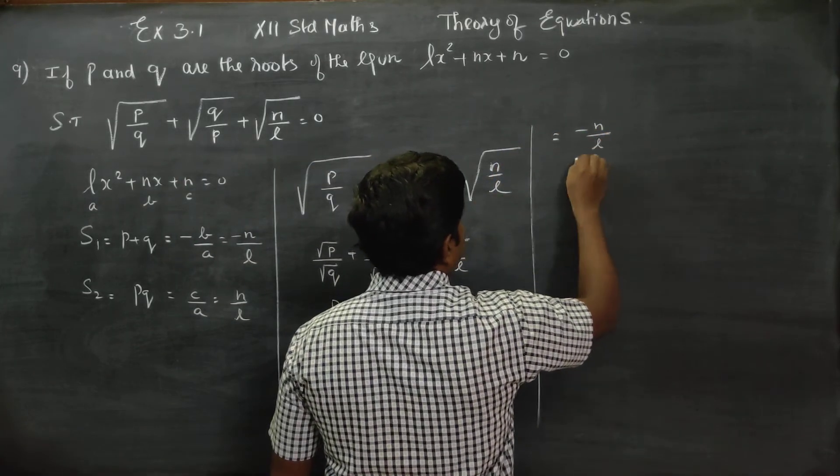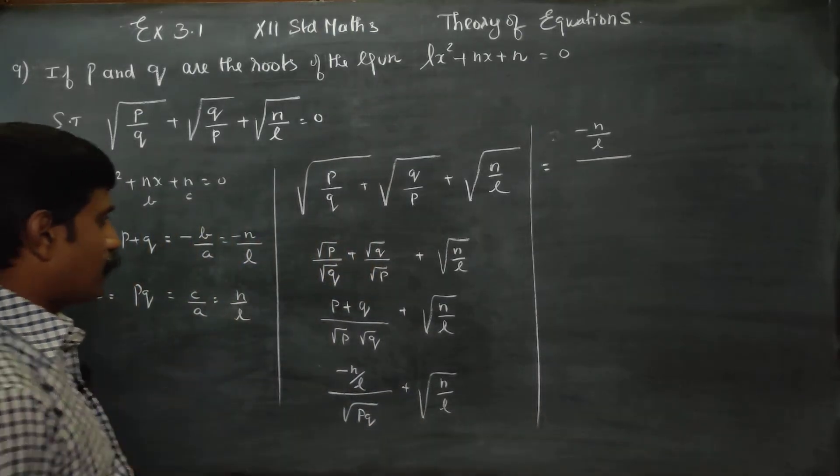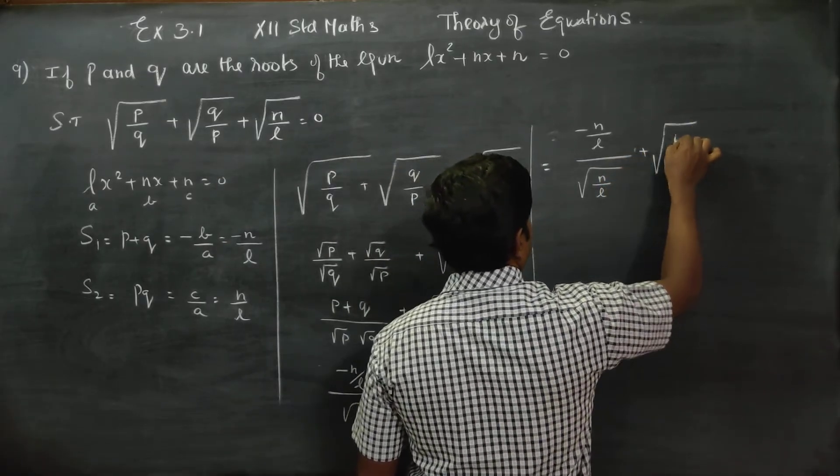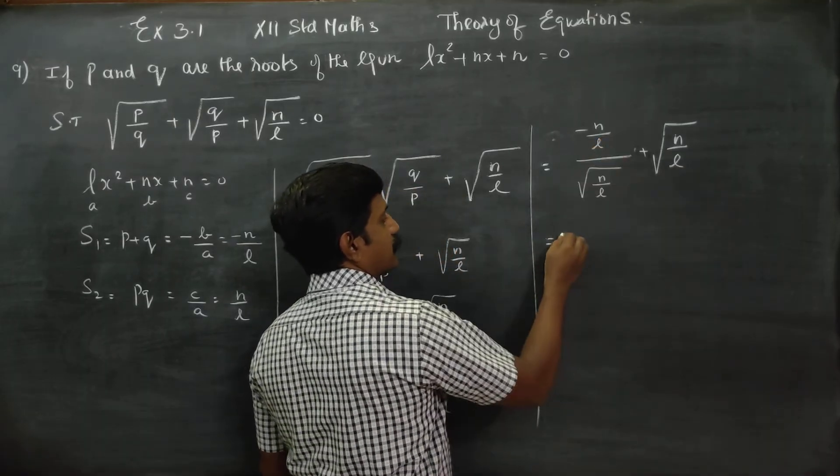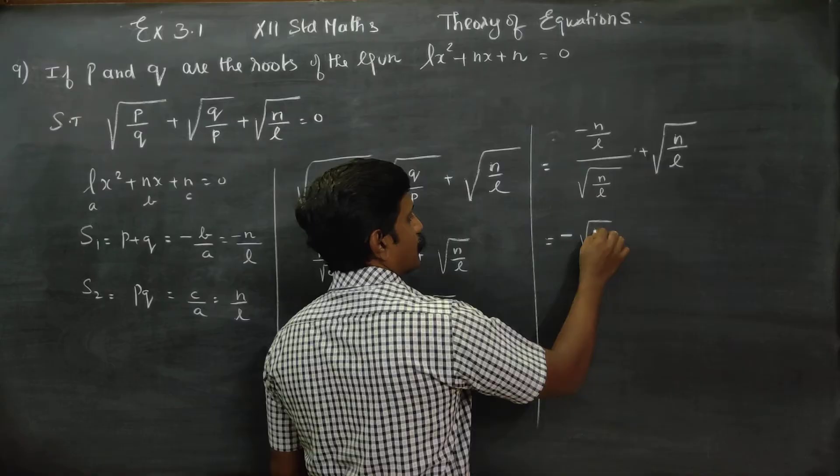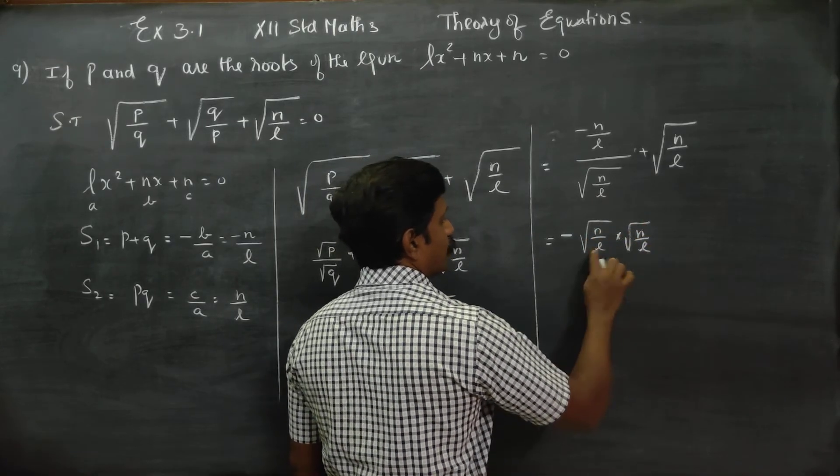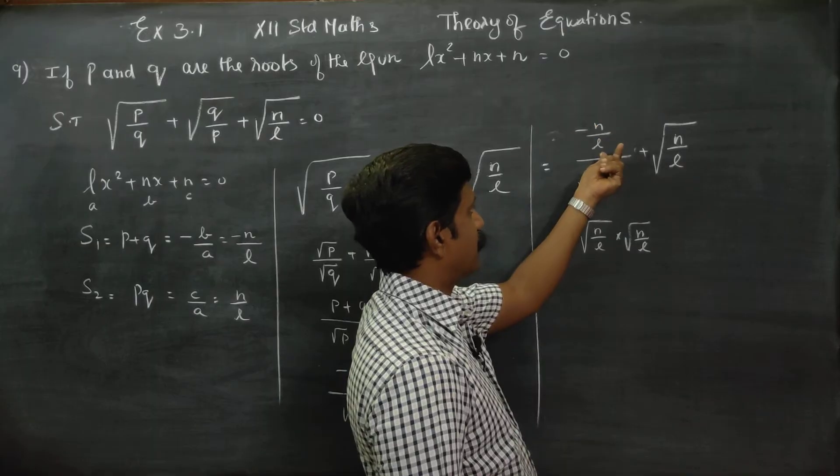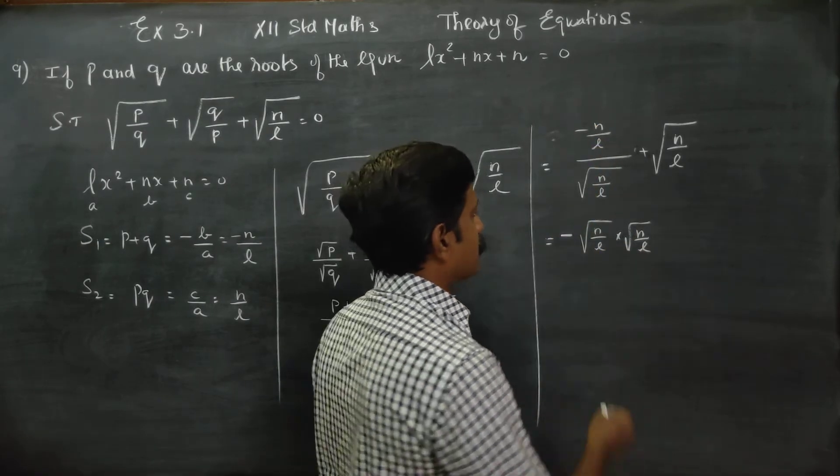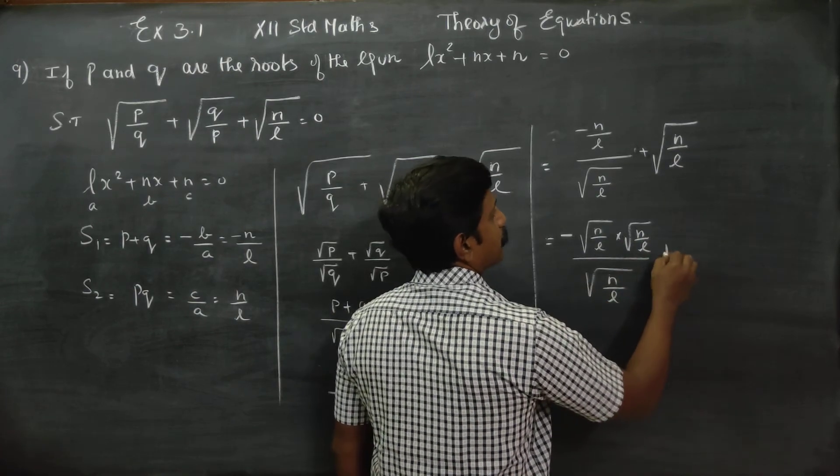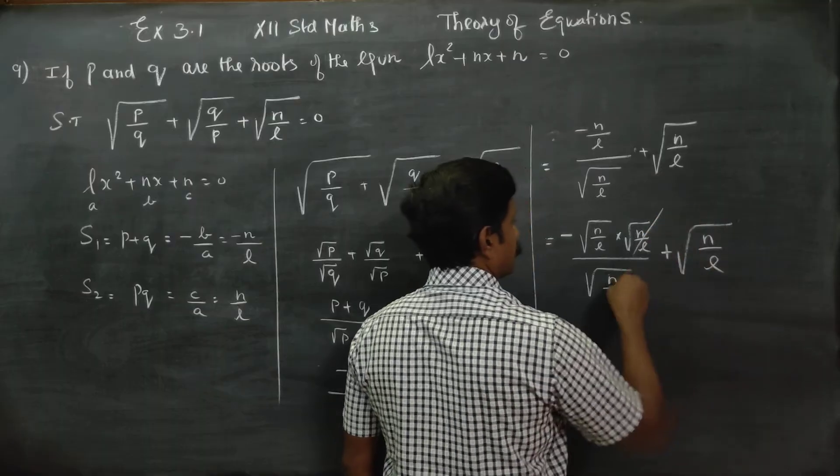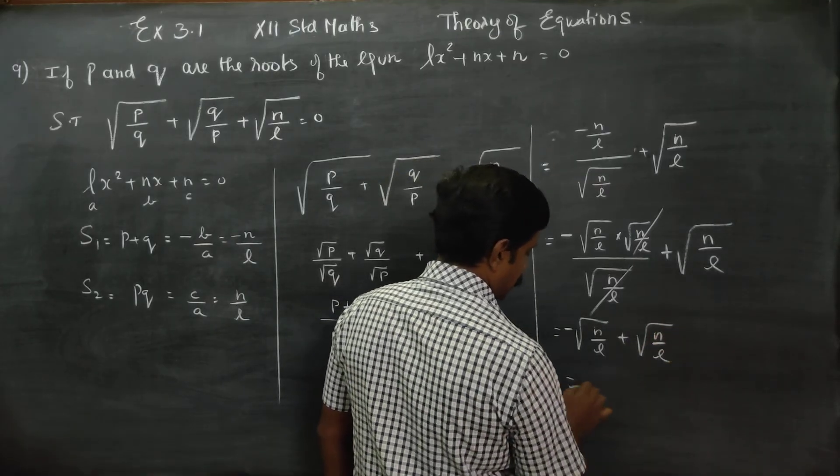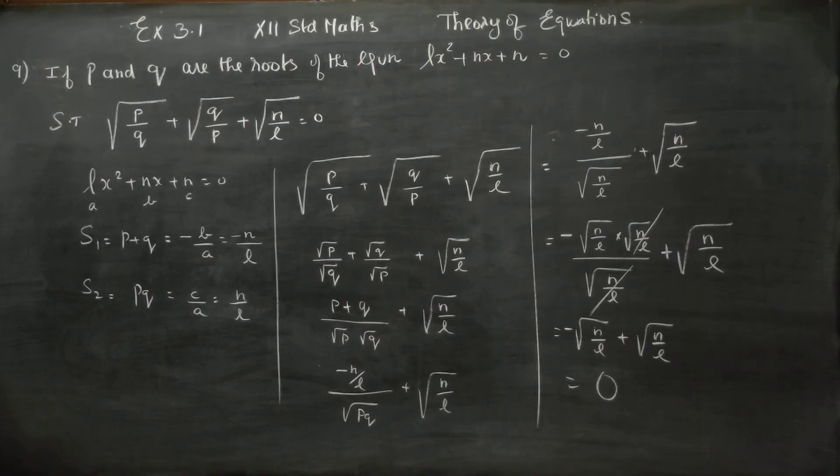Then minus N by L divided by root of N by L plus root of N by L. This can be written as minus root N by L times root N by L over root of N by L. If you multiply this, you will be getting N by L over root N by L. The denominators cancel, giving minus root N by L plus root N by L. Your answer is 0. Thank you.